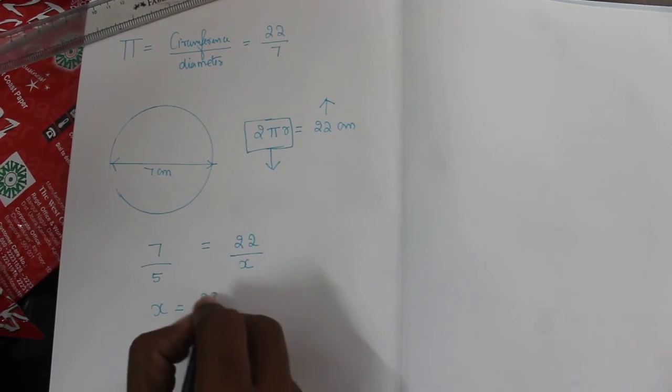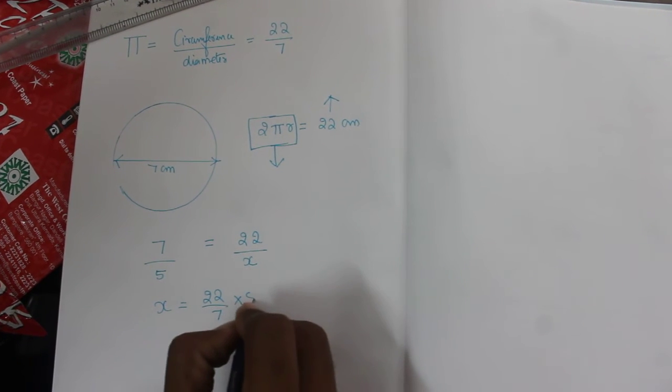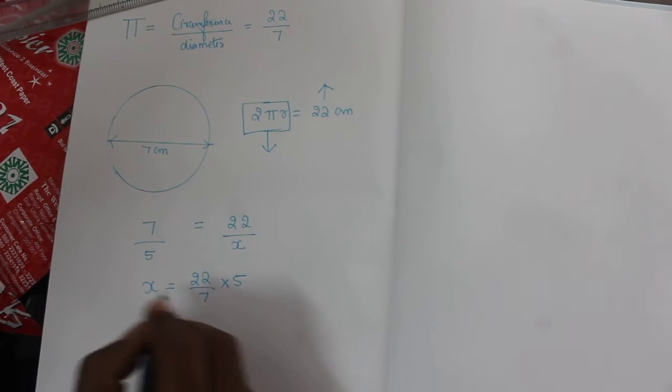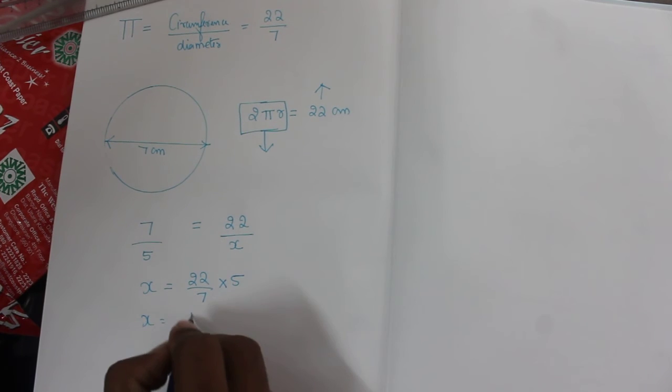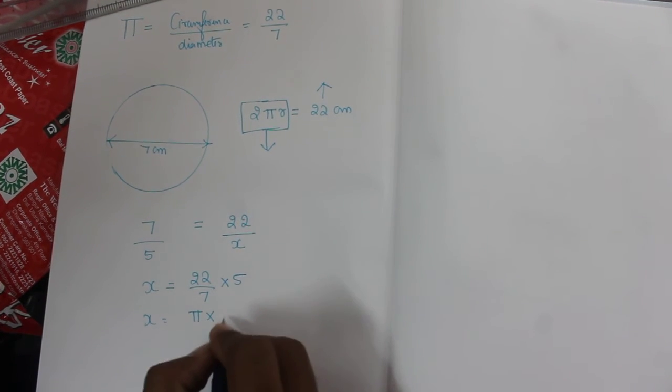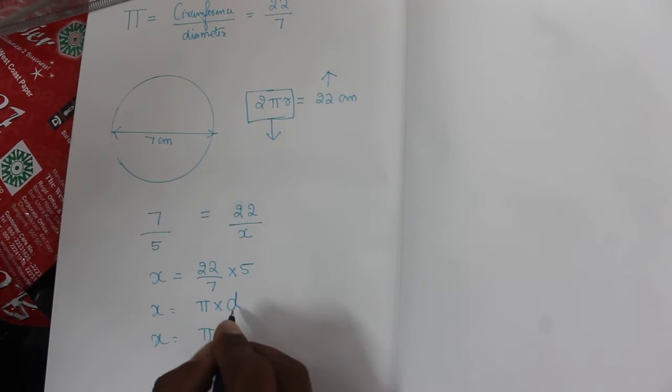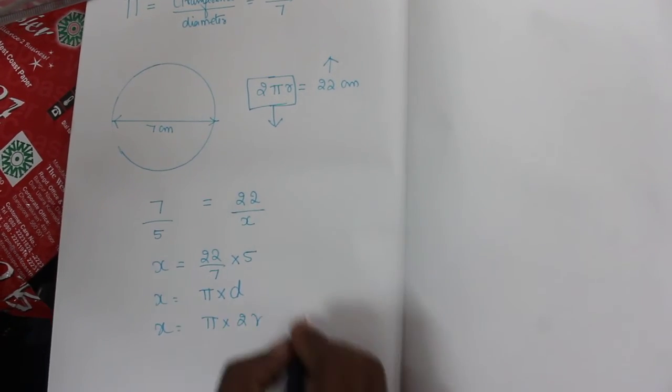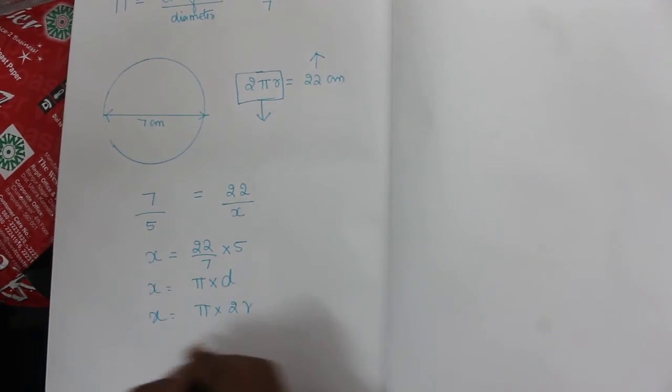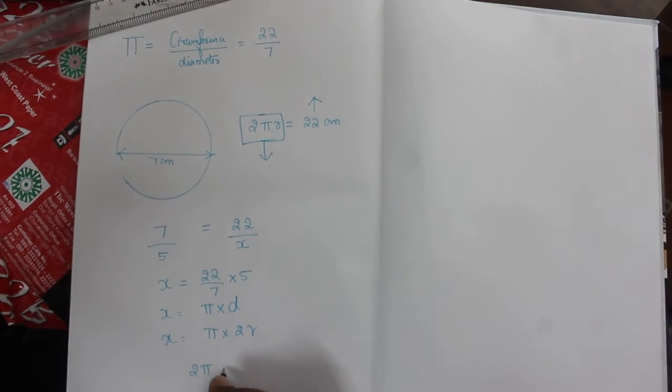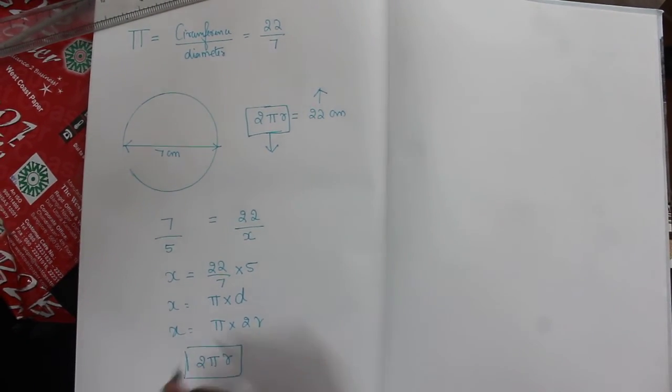Now x equals 22 by 7 times 5. So x equals 22 by 7, which is pi, times 5, the diameter of the circle. Or we can write pi times 2r. So this is how we get the formula for circumference, 2 pi r.